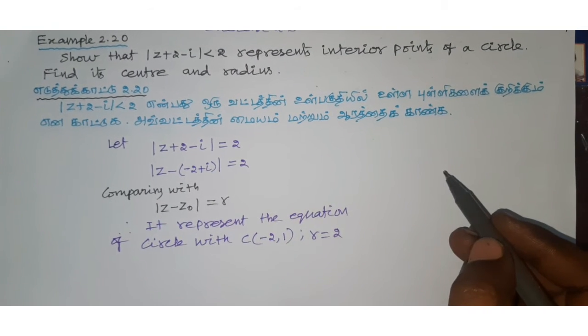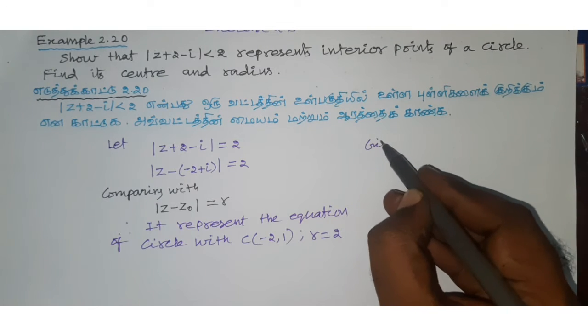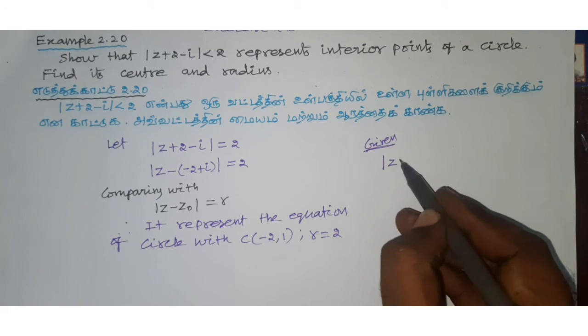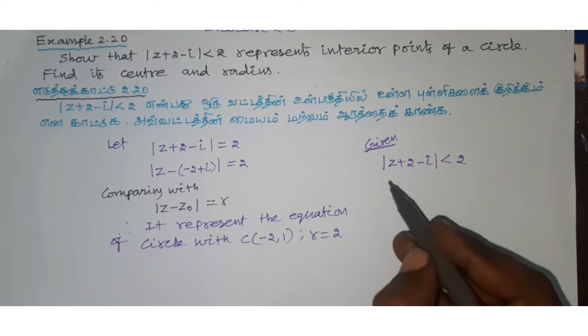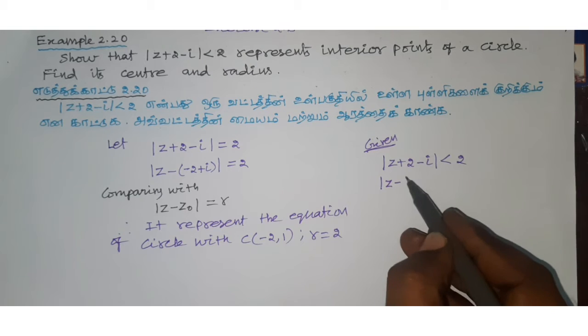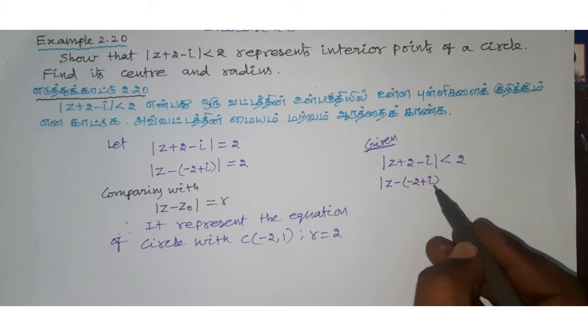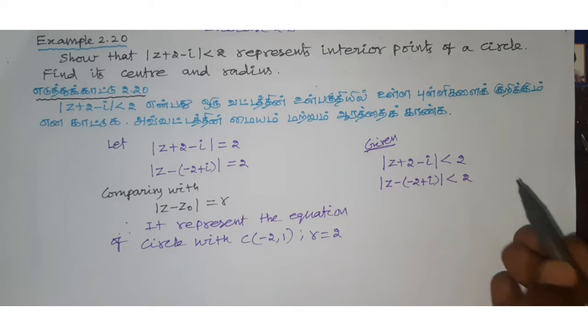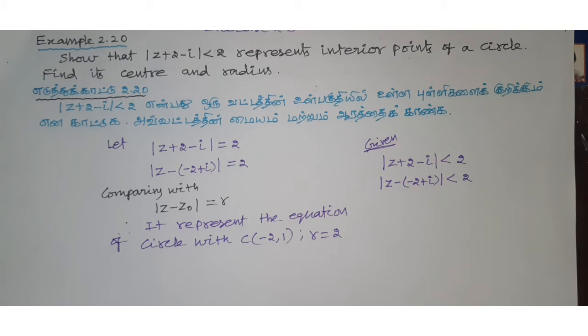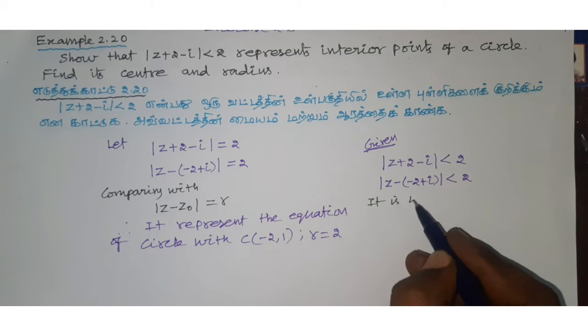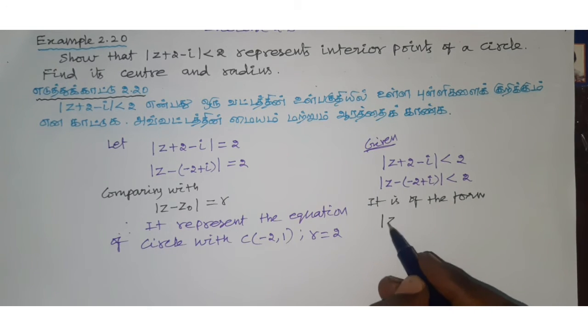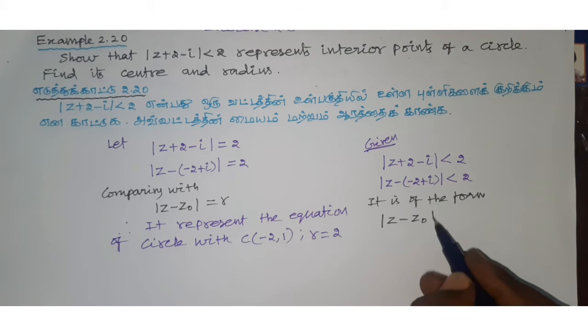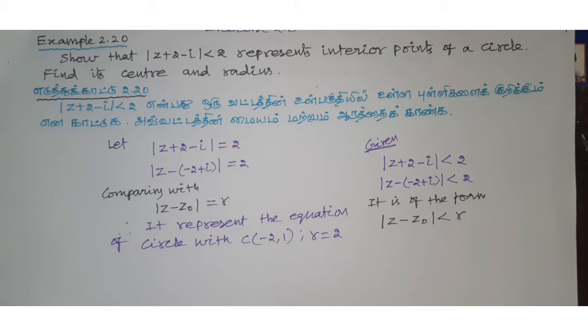Next, given modulus z plus 2 minus i less than 2. We can write this as modulus z minus bracket minus 2 plus i bracket less than 2. So it is of the form modulus z minus z naught less than r.